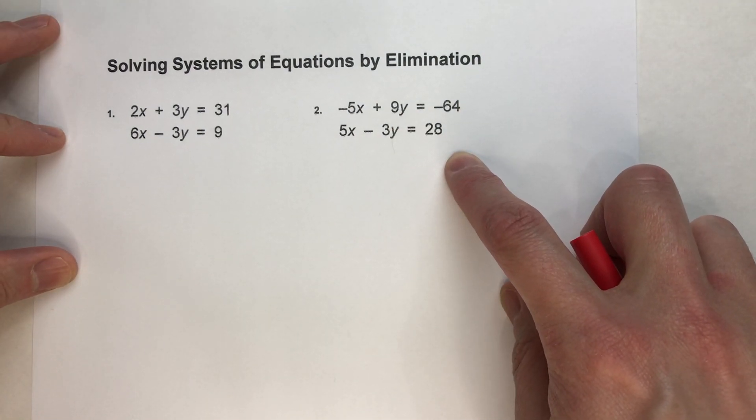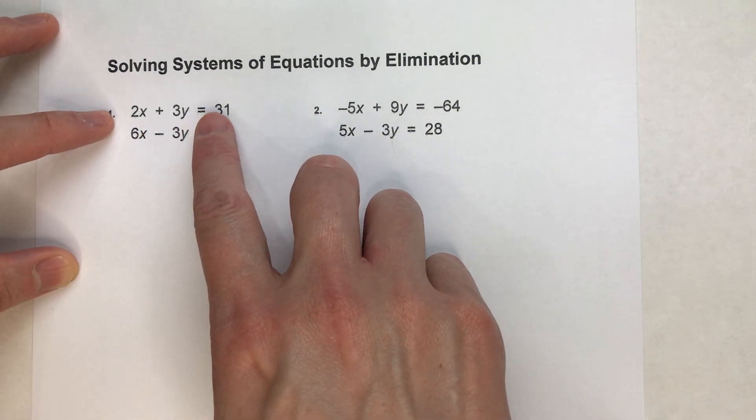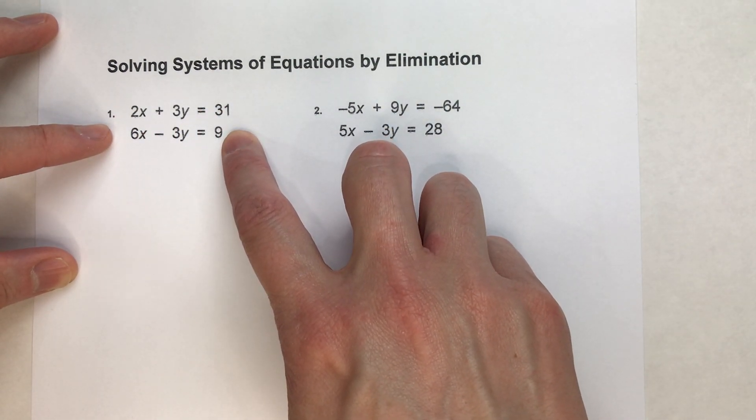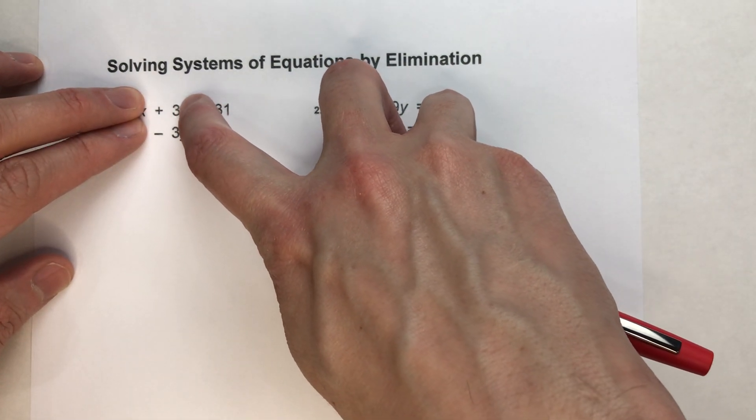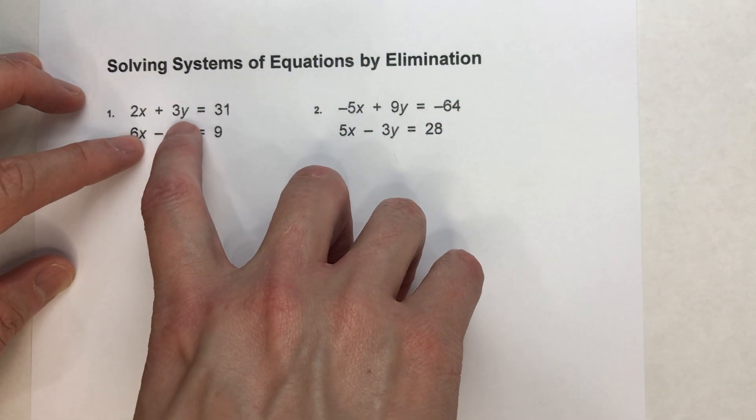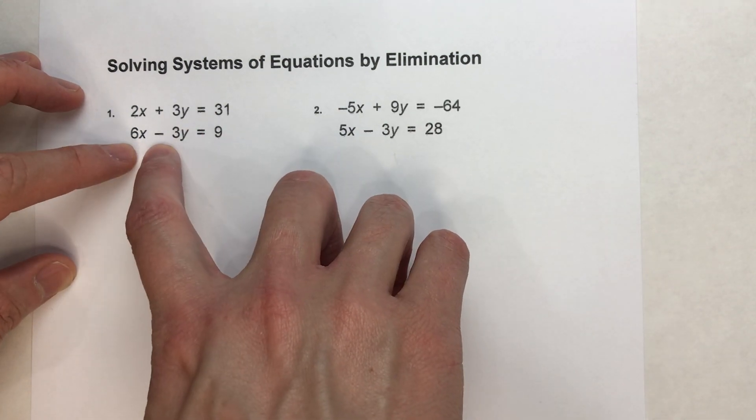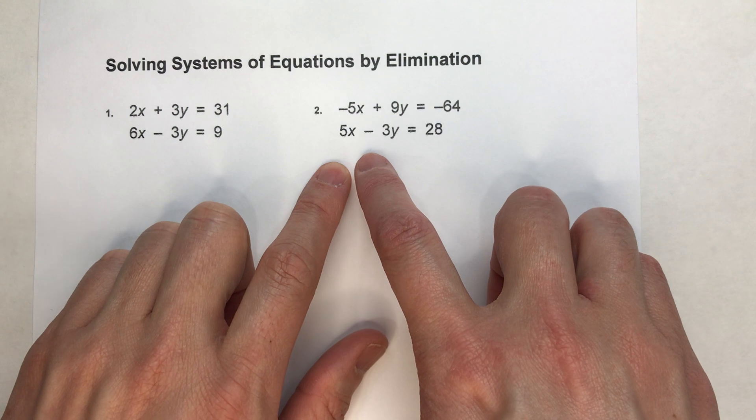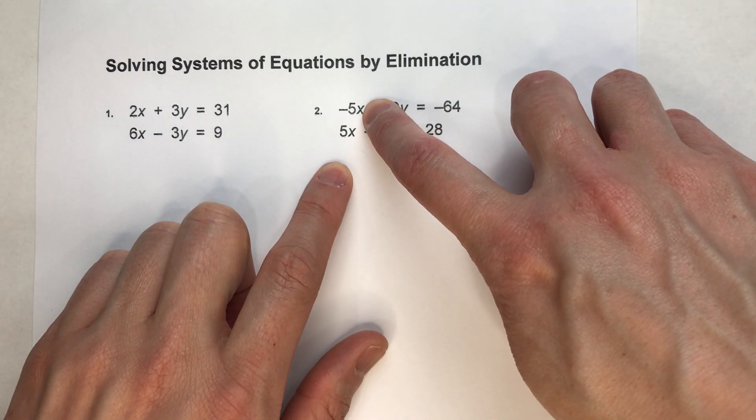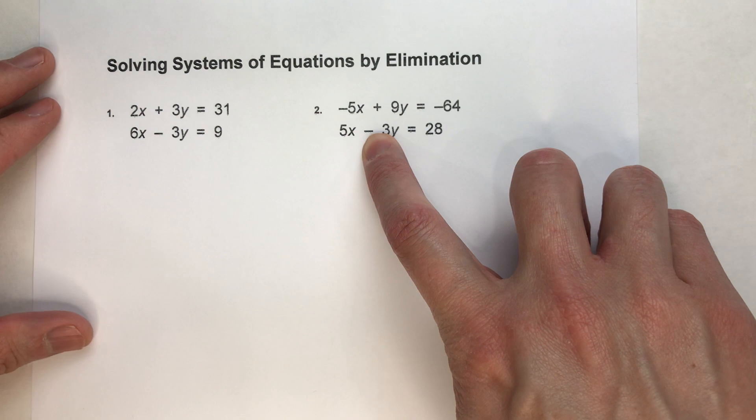But the thing that they have in common is, notice on the first set of equations, the y's have almost the exact same number in front of them. The top one has 3y, the bottom one has negative 3y. Over here, the x's almost have the exact same number in front of them: negative 5x and positive 5x.